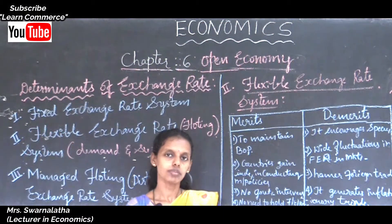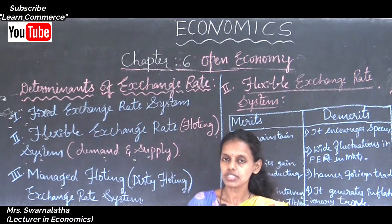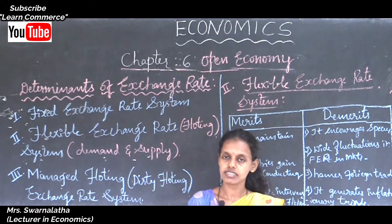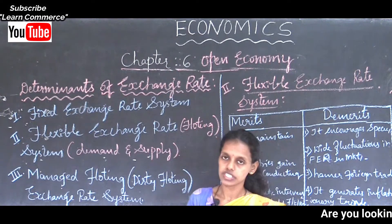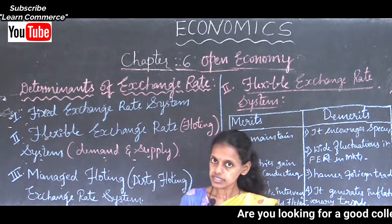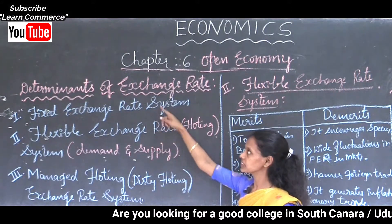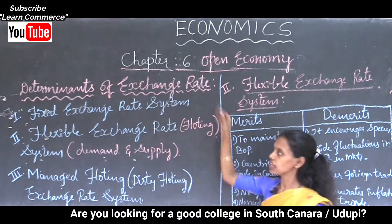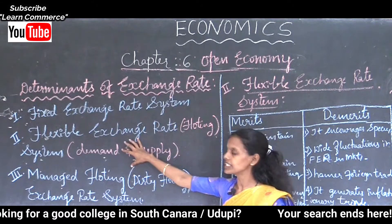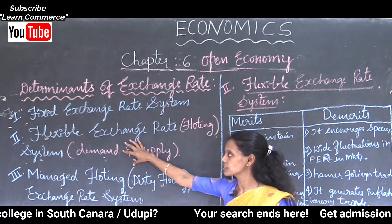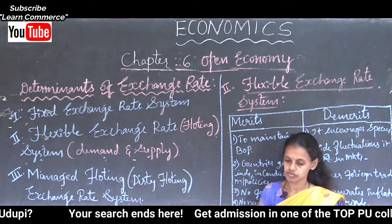Hello students, welcome back to Commerce Online Classes. In the previous class we had discussed regarding the fixed exchange rate system. Let us look at what is the second main determinant of the exchange rate system. The second main determinant of exchange rate system is the flexible exchange rate system.